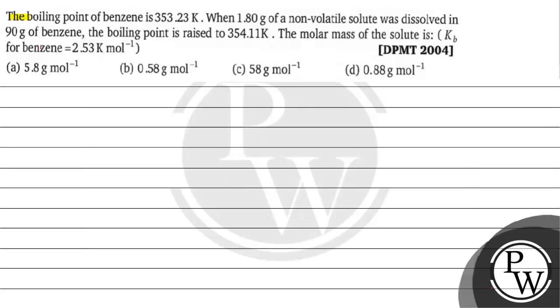Hello, let's read this question. The question says the boiling point of benzene is 353.23 kelvin. When 1.80 grams of a non-volatile solute was dissolved in 90 grams of benzene, the boiling point is raised to 354.11 kelvin. The molar mass of the solute is what? Kb for benzene is 2.53 kelvin per mole. Option A is 5.8 gram per mole, option B is 0.58 gram per mole, option C is 58 gram per mole, option D is 0.88 gram per mole.